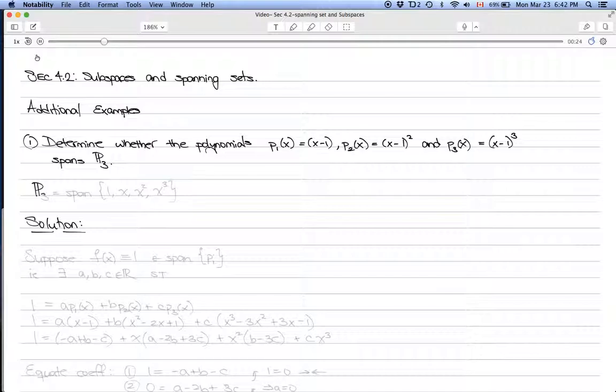We first want to remember what exactly P3 is. P3 is equal to the span of {1, x, x², x³}, so all polynomials with degree 3 or less.